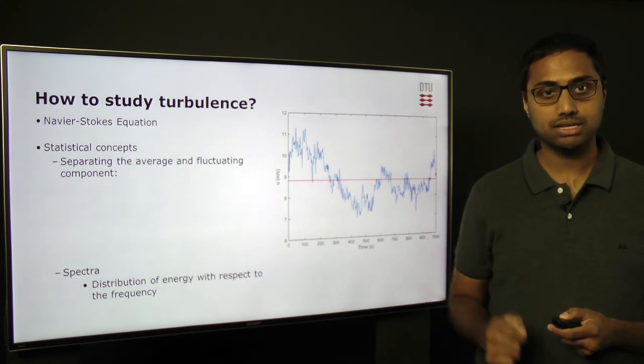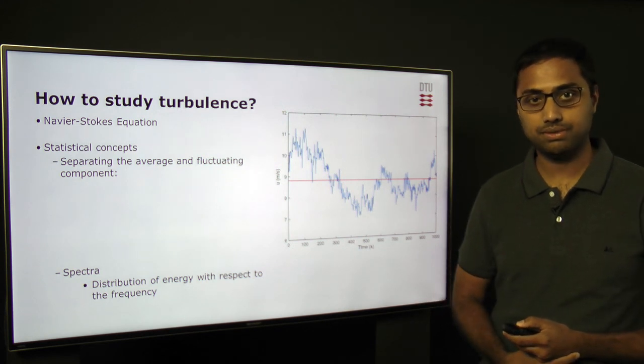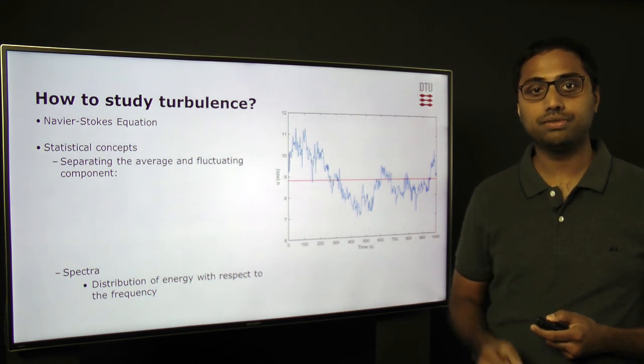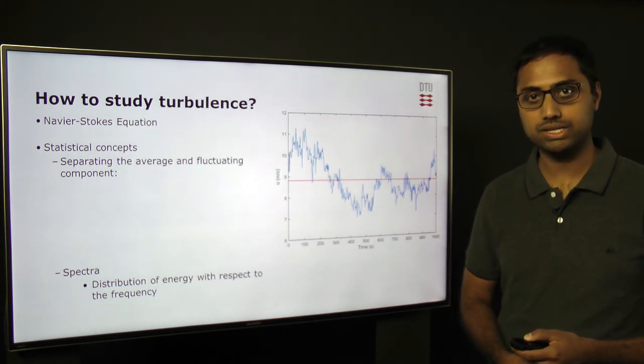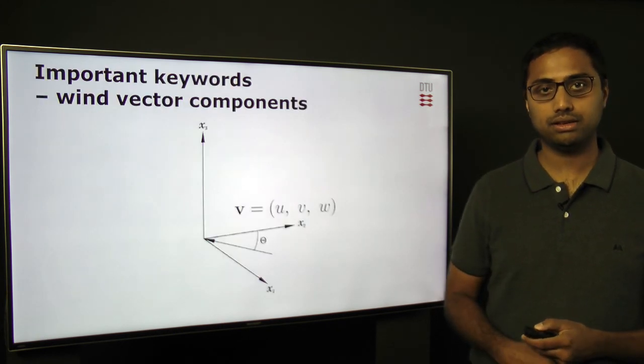A very important concept, a statistical concept important for wind energy, is turbulence spectra, which simply tells us about the distribution of the kinetic energy of wind with respect to the frequency. We will learn a little bit more about spectra in the next slide.